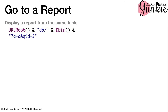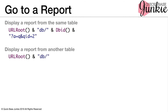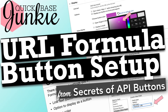Next, to display a report from another table, we'll start with the URL root, but then use the table alias for the other table, followed by our action and the query ID. And if you need a little help setting up your URL formula as a button, check out the video URL Formula Button Setup.